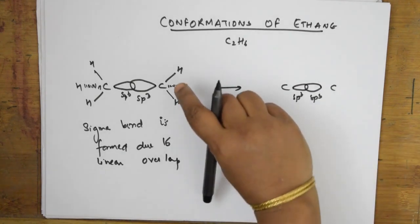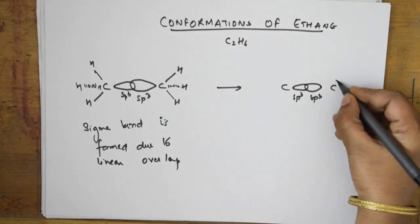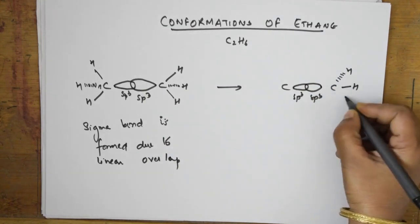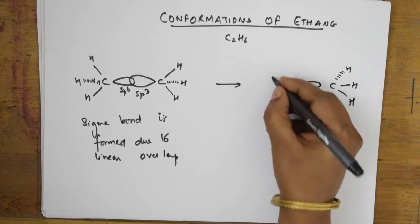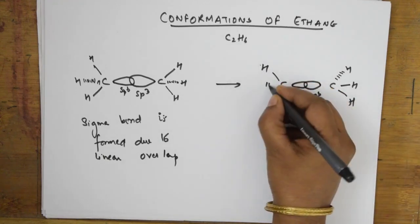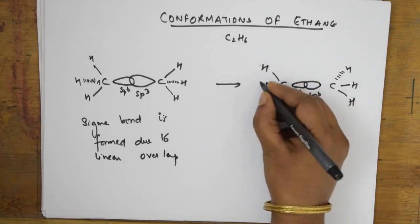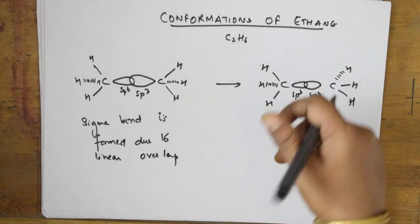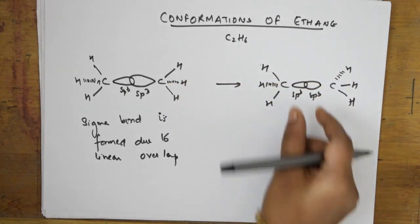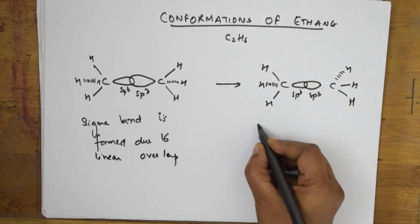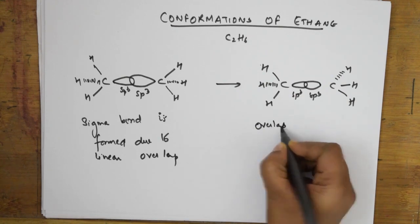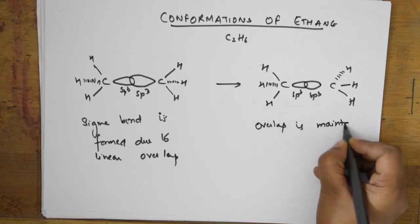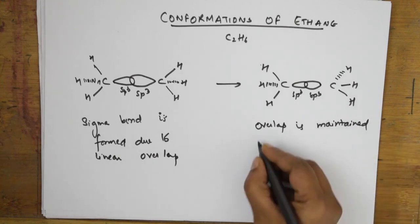Eclipsed and staggered conformations are represented by sawhorse projection and Newman projection. There is also an intermediate form called skew conformation. For such conformations, the important thing to remember is that bond angle and bond length remain the same.